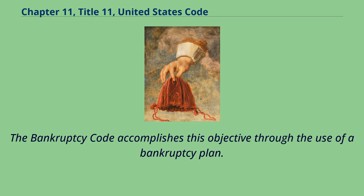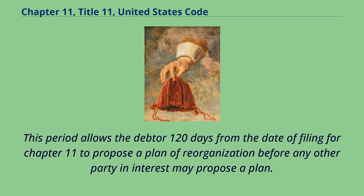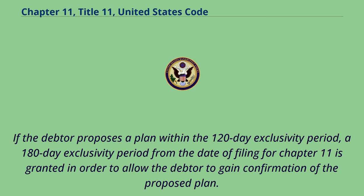The bankruptcy code accomplishes reorganization through the use of a bankruptcy plan. The debtor in possession typically has the first opportunity to propose a plan during the period of exclusivity. This period allows the debtor 120 days from the date of filing for Chapter 11 to propose a plan of reorganization before any other party in interest may propose a plan. If the debtor proposes a plan within the 120-day exclusivity period, a 180-day exclusivity period from the date of filing is granted to allow the debtor to gain confirmation of the proposed plan.